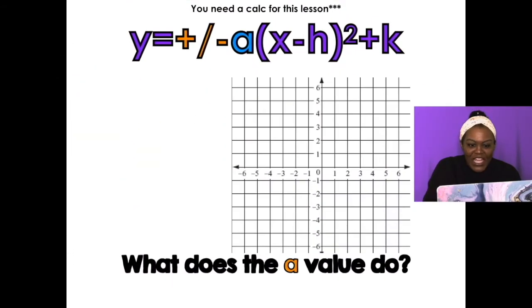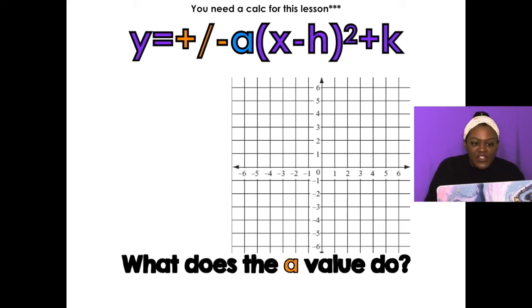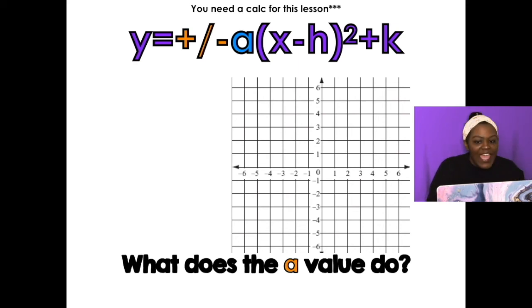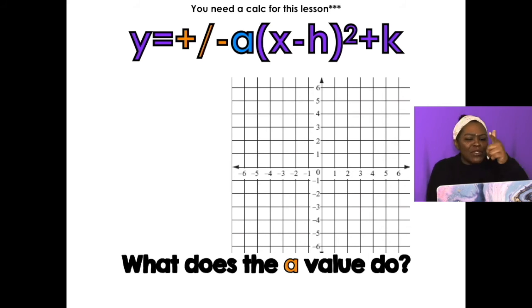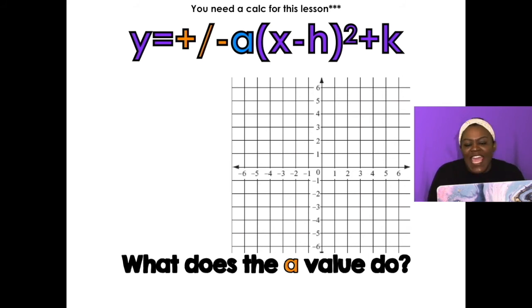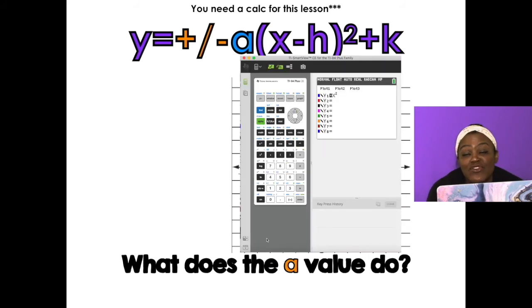The last thing we haven't covered yet is the A value. We've done the plus or minus, we've done the H, we've done the K — but notice I skipped over that A value at the beginning. The A is kind of tricky.